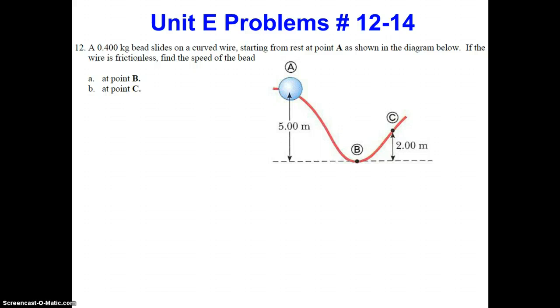Welcome to the solution to the work, power, and energy problem set, problem number 12. We have a 0.4 kg bead that slides on a curved wire starting from rest at point A as shown in the diagram below. If the wire is frictionless, find the speed of the bead at point B and at point C.